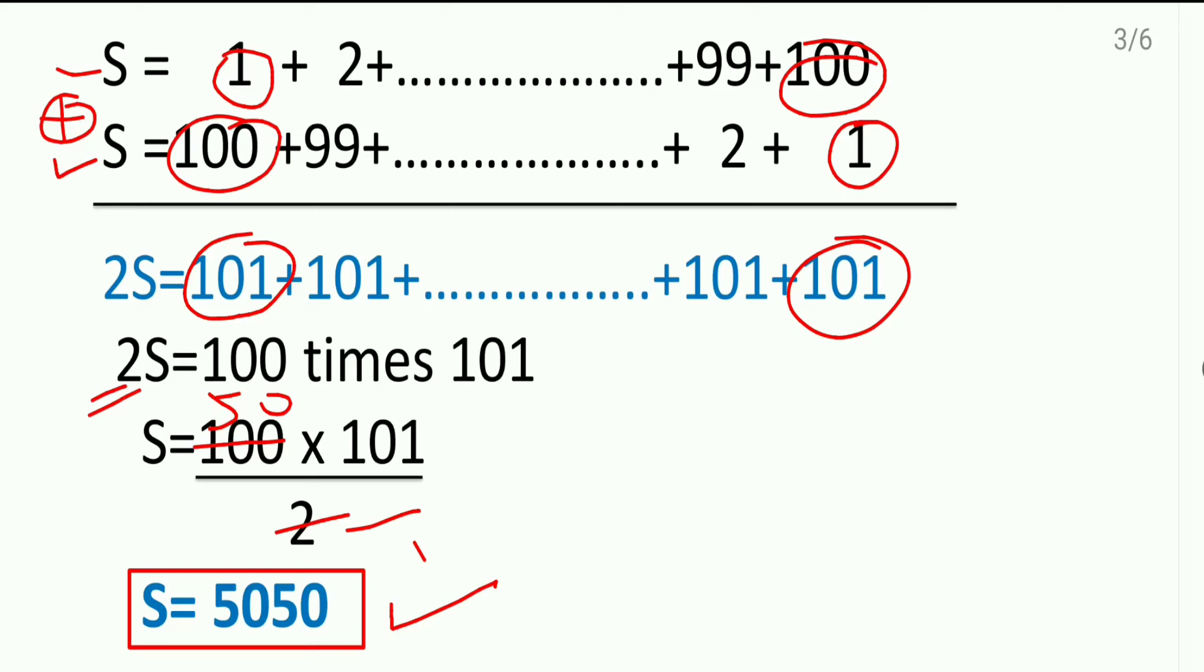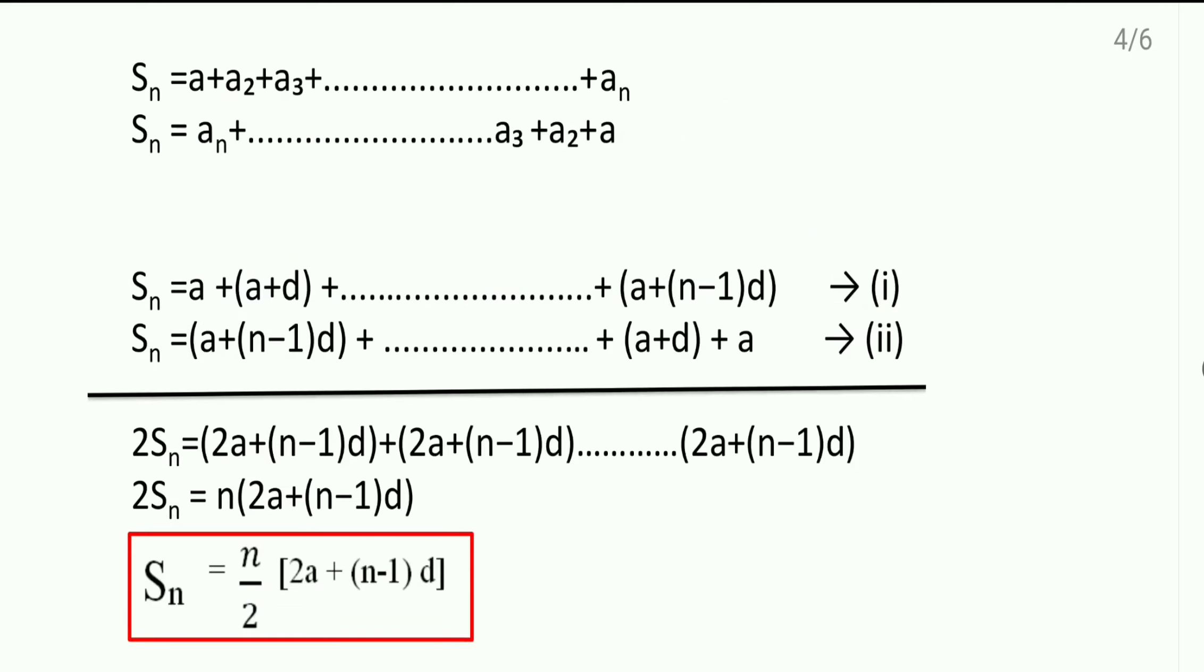Exactly the same way we can find out sum of n terms. Let us see how to get the formula for that. First, we have written here sum of n terms is equal to first term, second term, third term till the nth term.